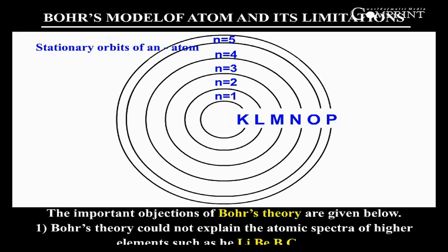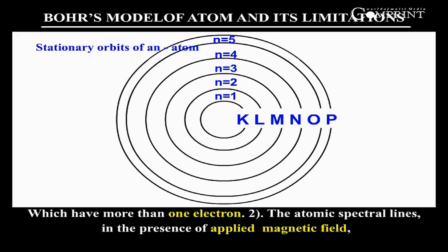Bohr's theory could not explain the atomic spectra of higher elements such as helium, lithium, beryllium, boron, carbon, and so on, which have more than one electron.